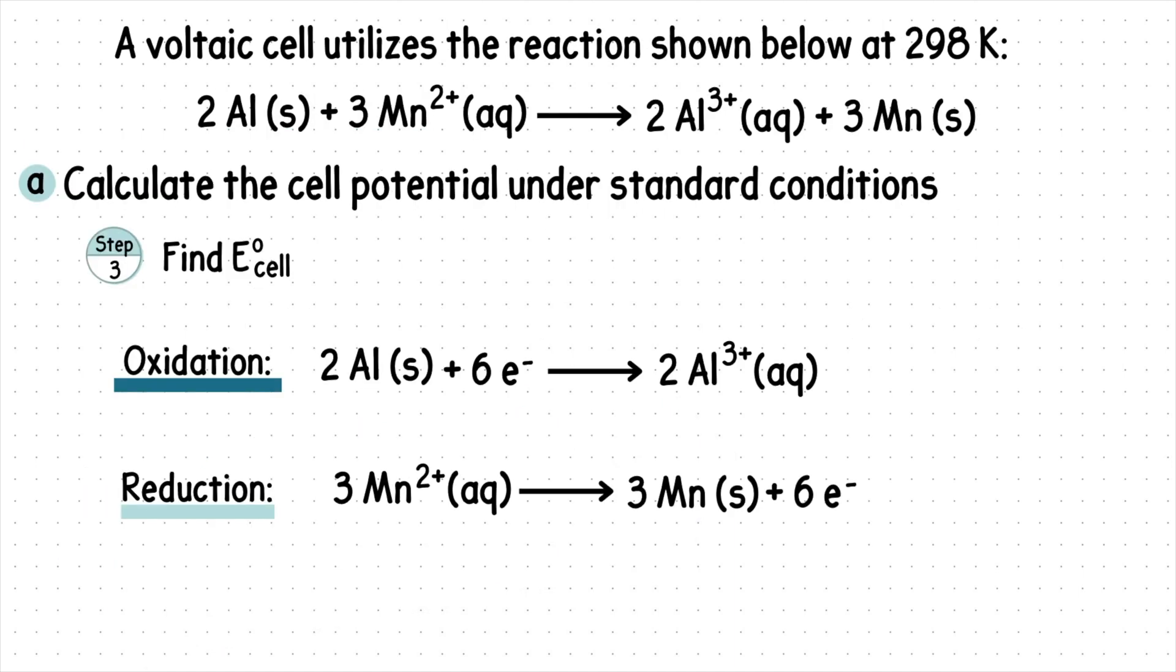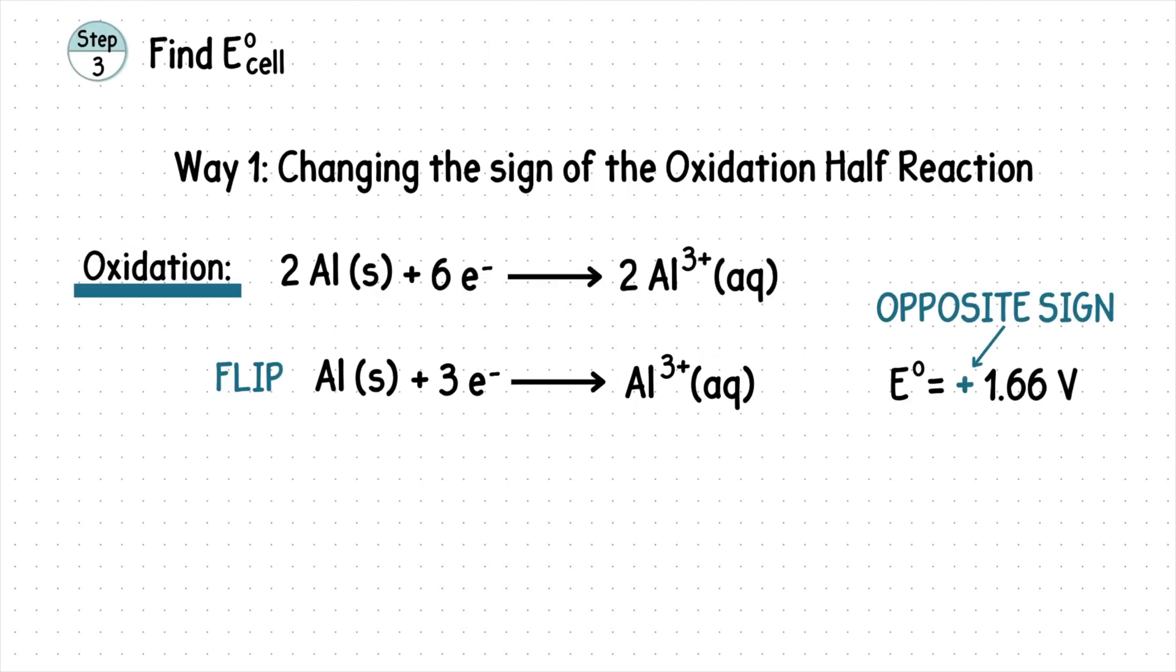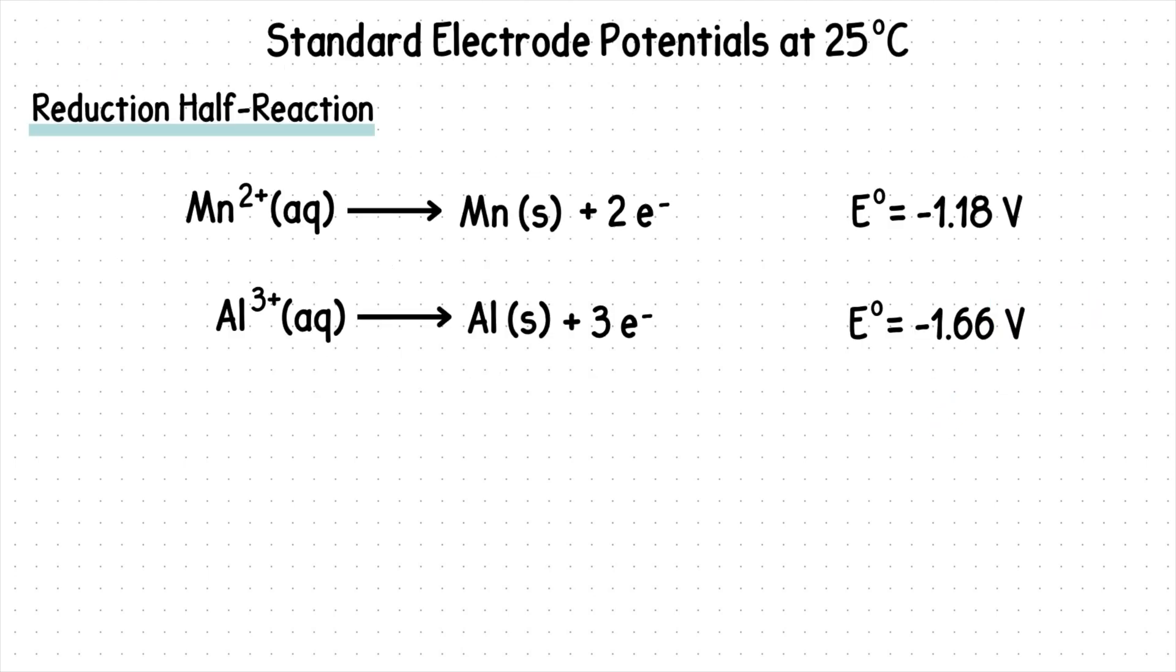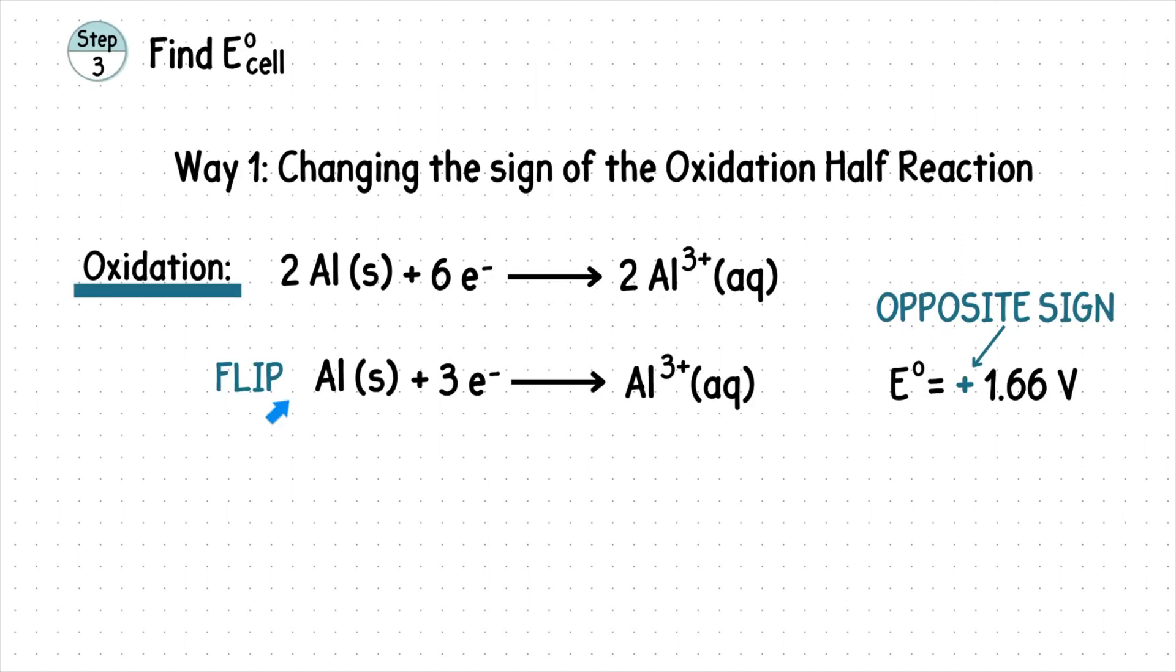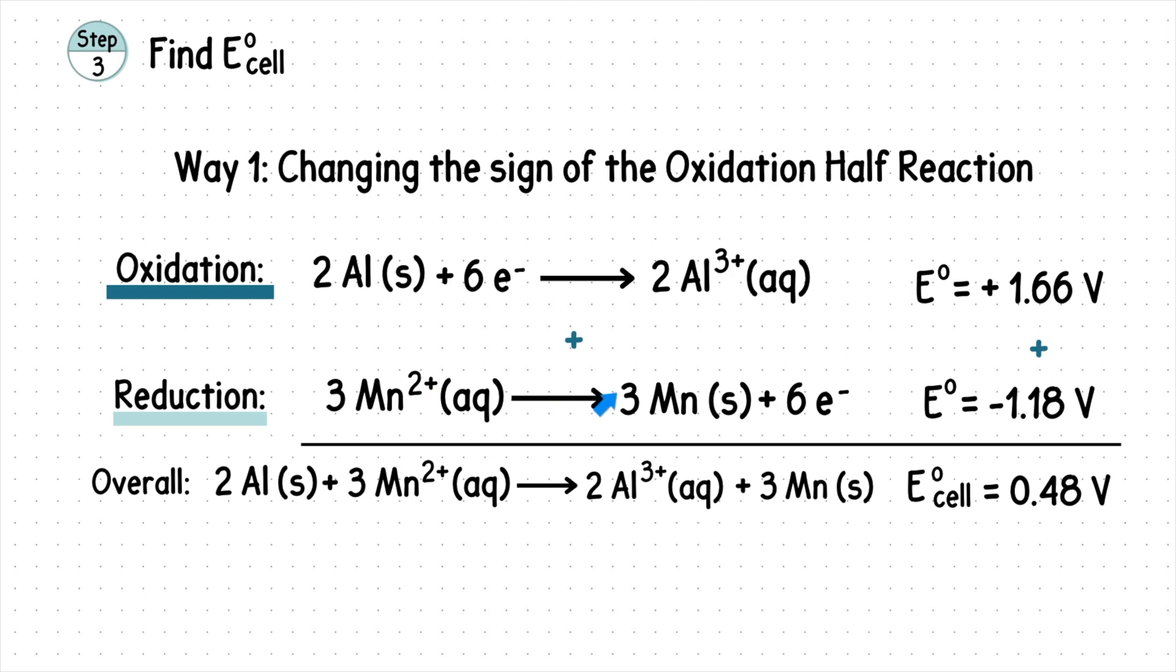Step 3. Find E of the cell. Alright, there are two different ways we can do this. Way 1 is by changing the sign of the oxidation half reaction. Since the half reactions are written as reduction reactions, in order for them to match our oxidation half reaction, we would flip the reaction and change the sign. Then add the new positive value to the reduction reaction's potential. To get the overall cell potential of 0.48 volts.